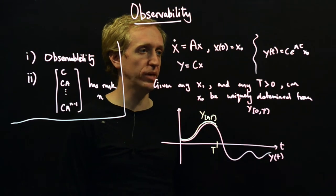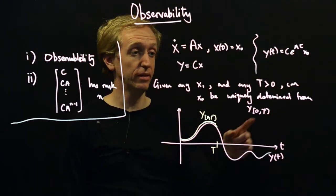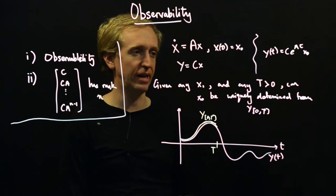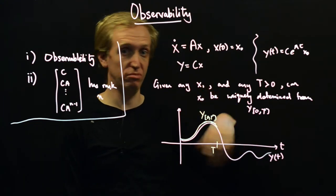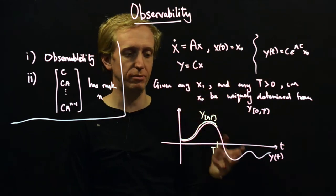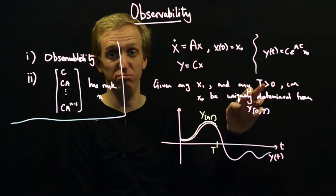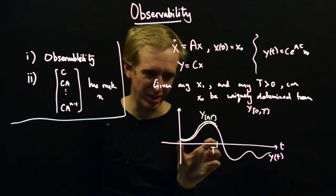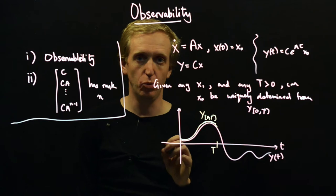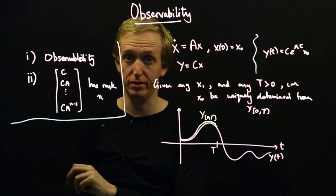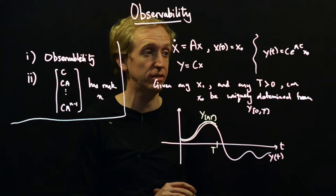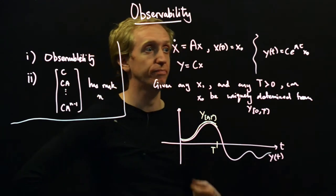So again we have the same weirdness as in the controllability case. Capital T here can be made arbitrarily small, so for the system to be—I suppose I didn't actually explicitly say—if this holds the system is said to be observable and if it doesn't hold it's not observable. But in order for this to hold, this statement needs to be true for arbitrarily small intervals of time t. So we could be given an arbitrarily short snapshot of the output trajectory and based on this we need to be able to uniquely determine the initial condition that caused it. So being given an arbitrarily short trajectory or being given the whole trajectory it doesn't matter, we should be able to uniquely determine x0 either way. And if that's the case then the system is said to be observable.